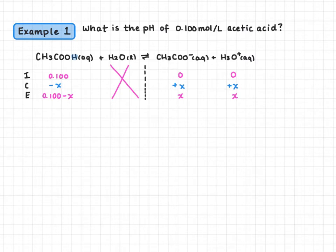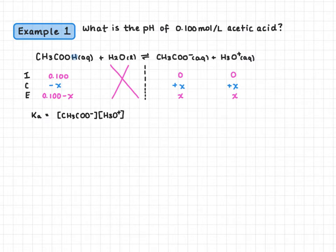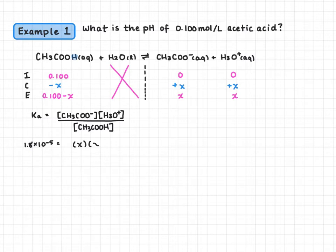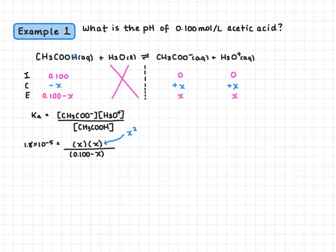In order to find pH we need to solve for hydronium, so we're solving for X. Our next step is to write the Ka expression: acetate times hydronium divided by acetic acid. We can look up the Ka for acetic acid and find that it is 1.8 times 10 to the negative 5. Filling in our ICE table values, we have X times X on top, and 0.100 minus X on the bottom, which simplifies to X squared over 0.100 minus X. Solving this would require a quadratic, which we want to avoid.